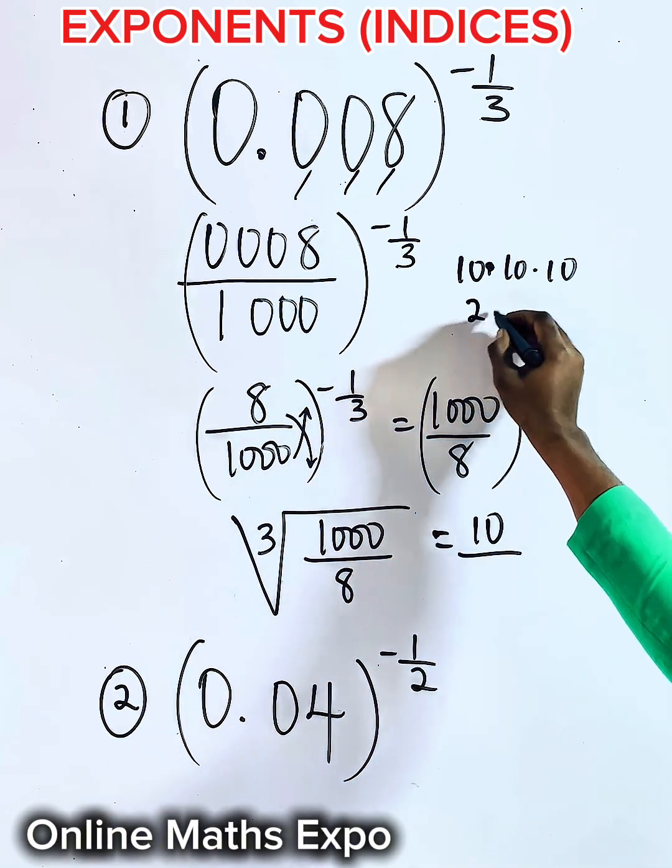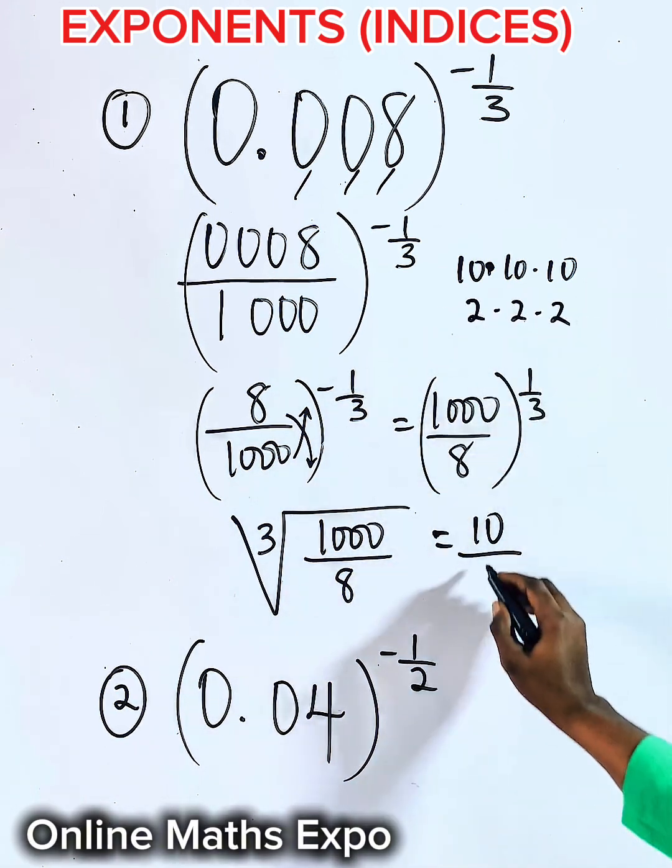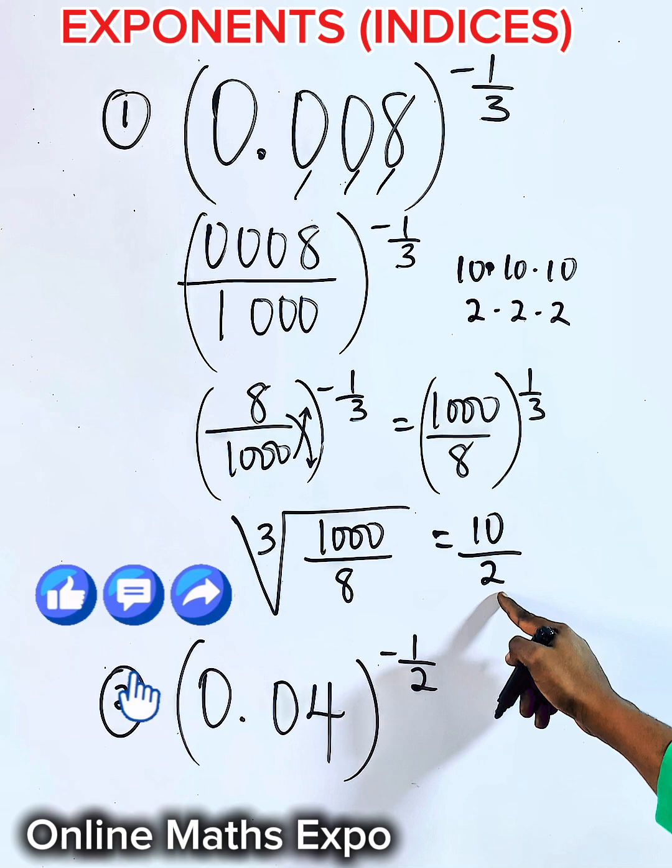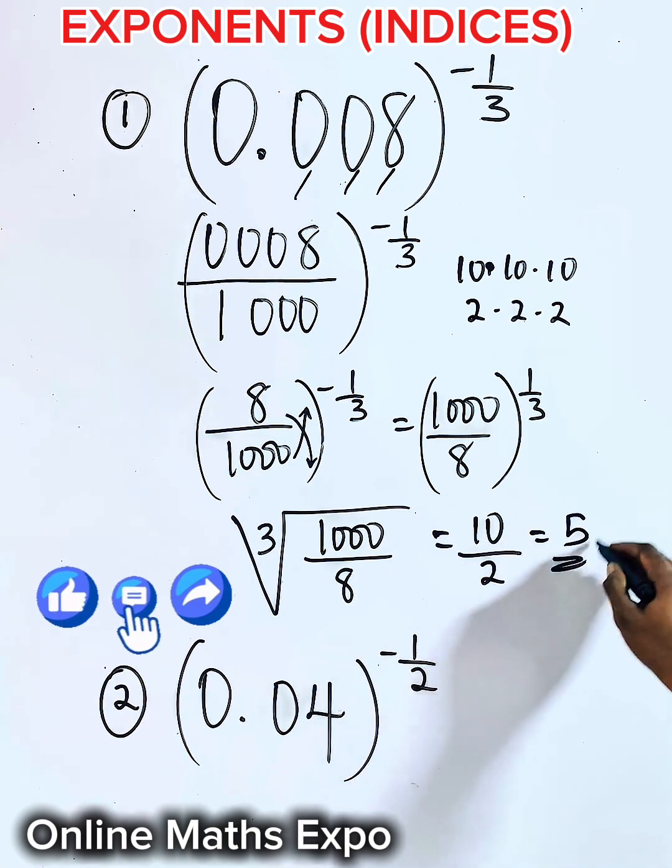For 8, it is 2 multiplied 3 times. So we have 2. And when you divide 10 by 2, it gives you 5 as an answer.